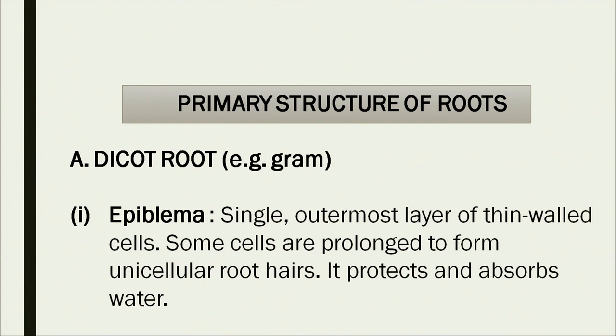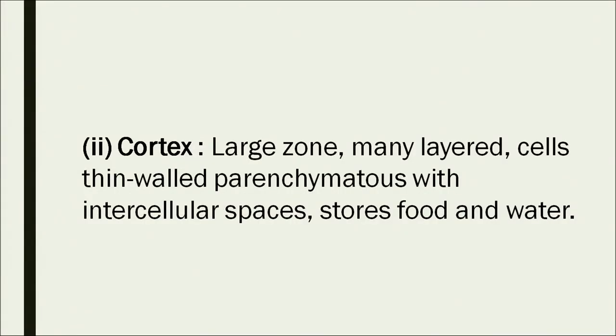Imagine the way you cut certain salads transversely — for example, onions cut transversely. The structures visible under the microscope in a dicot root of gram are as follows: The outermost layer is the epiblema — a single outermost layer of thin-walled cells. Some cells are prolonged to form unicellular root hairs. It protects the root and absorbs water. The next layer is called cortex — a large multi-layered zone of thin-walled cells.